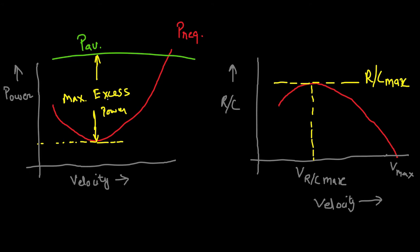Practically, if the aircraft is flying at the velocity corresponding to minimum power required and the pilot suddenly opens full throttle, the aircraft will climb at the maximum rate of climb. If the aircraft is flying at some other velocity and the pilot gives full throttle, only a smaller amount of excess power is available and the aircraft will climb at a lower rate. This is illustrated on the rate-of-climb versus velocity graph, where the maximum rate of climb corresponds to the minimum power velocity.